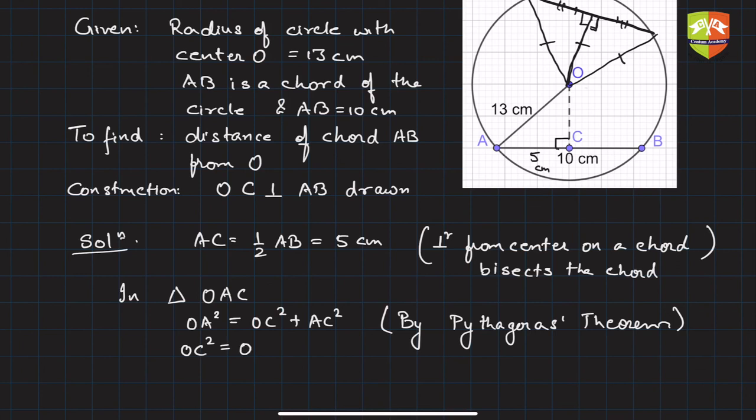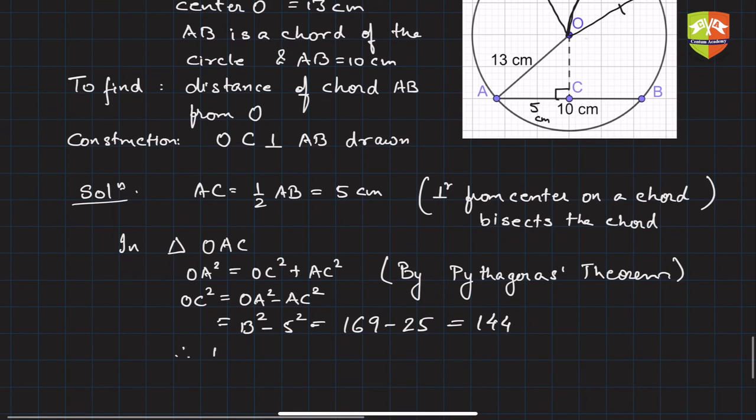OA is 13, so 13² minus AC is 5². Hence you'll get 169 minus 25, which is 144. Therefore OC equals √144 equals 12, and the units were centimeters.